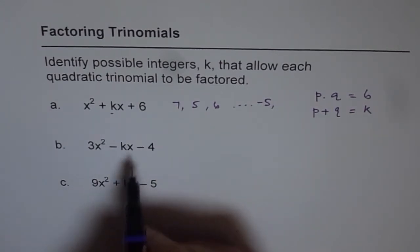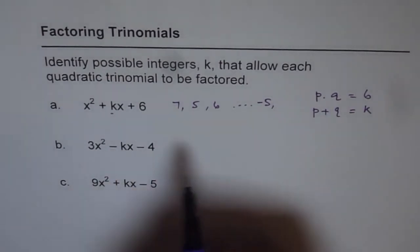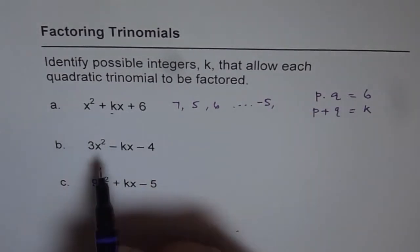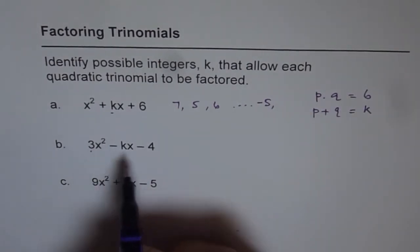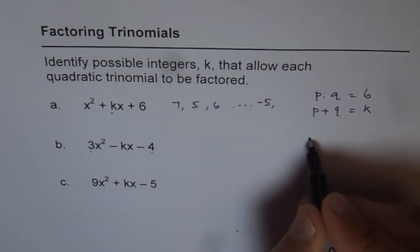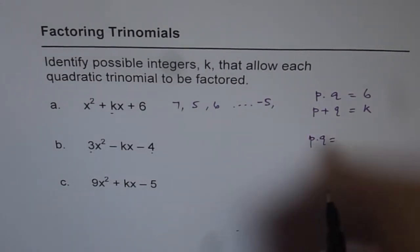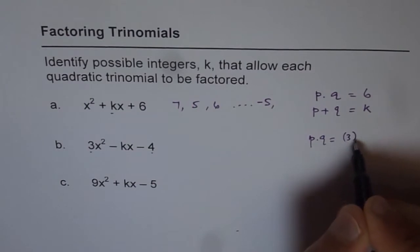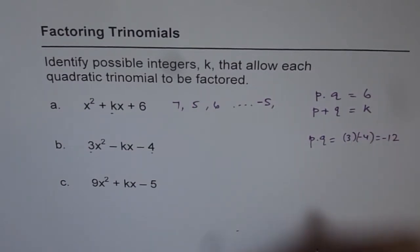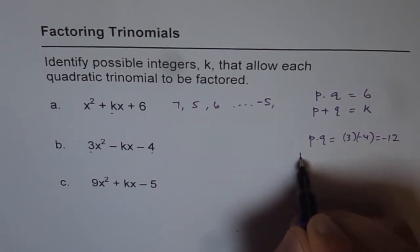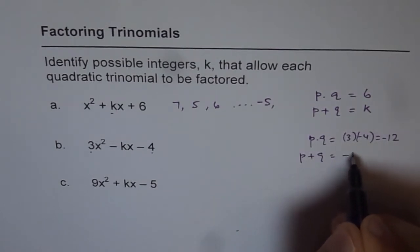Here, let me do one more, give you a hint at least. We will follow the same method. So we are looking for a product, but the product should be 3 times minus 4. So product of two numbers, p and q, has to be 3 times minus 4, that is minus 12. And this sum should be equals to minus k.